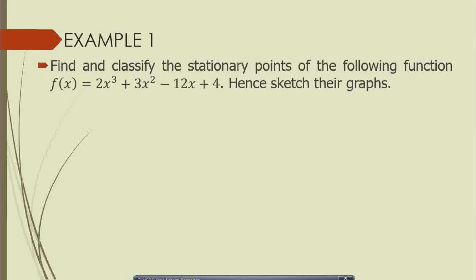We are given this situation: we are asked to find and classify the stationary points of the function f(x) = 2x³ + 3x² - 12x + 4, and also to sketch the graph of this function. Before we work on this, it is important to recall what we discussed in session one, where I took you through the procedures for establishing stationary points and coming up with the graph.